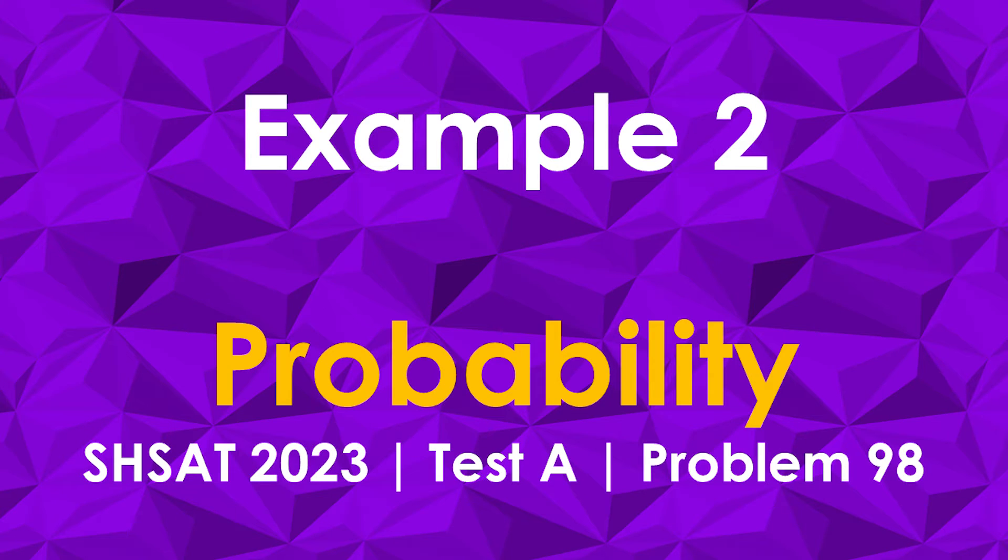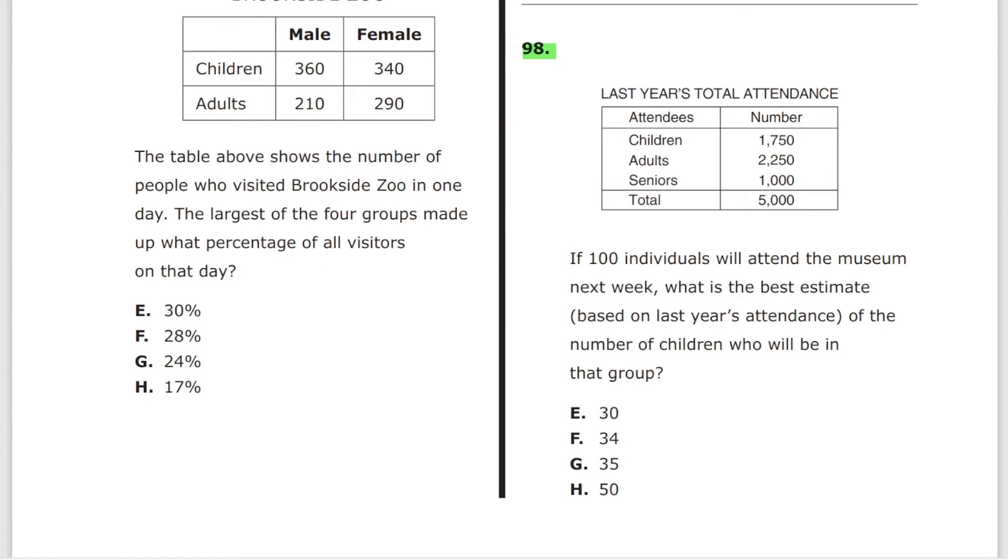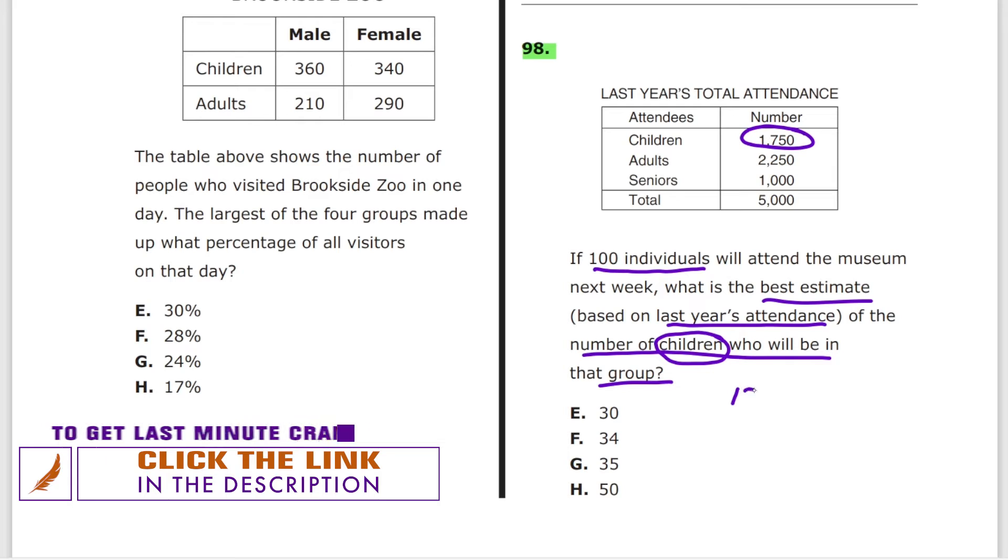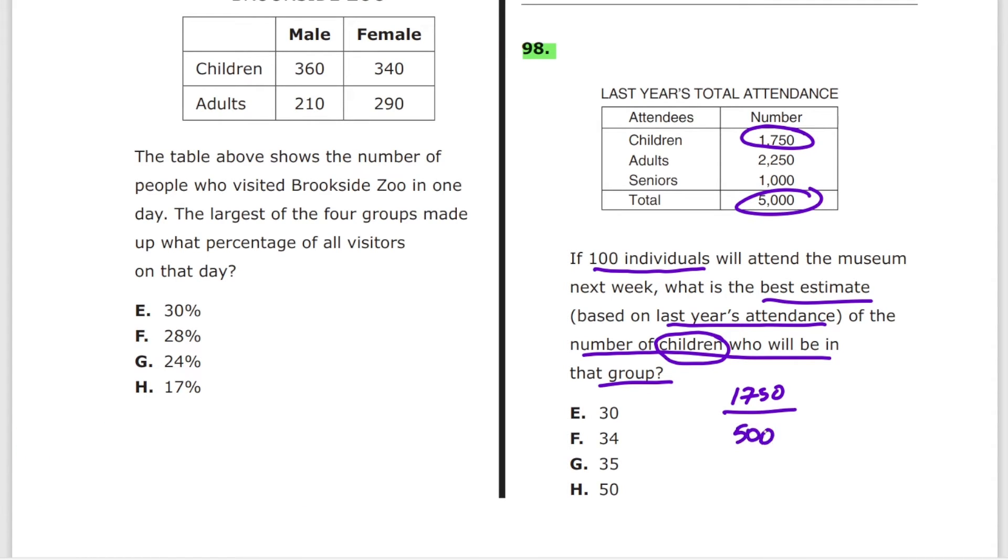Problem 98 from test A. Same exact approach. If 100 individuals will attend the museum next week, what's the best estimate based on last year's attendance of the number of children who will be in that group? We got 1,750 children divided by total, by 5,000. That is our probability of having a child, as opposed to adult or a senior. Then we just multiply 100 individuals by this probability.